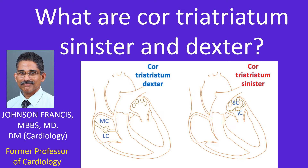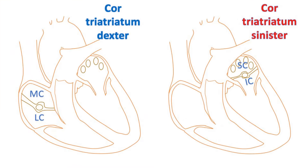Cor triatriatum, or heart with three atrial chambers, could be either cor triatriatum sinistrum or cor triatriatum dexter depending on which side the additional chamber is present. In cor triatriatum sinistrum, there is a superior and inferior chamber with a membrane dividing the left atrium. In cor triatriatum dexter, the right atrium is divided into a medial and a lateral chamber. Though both are rare congenital anomalies, cor triatriatum dexter is less common.